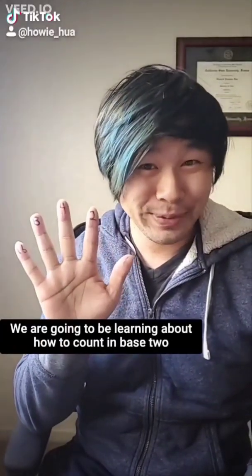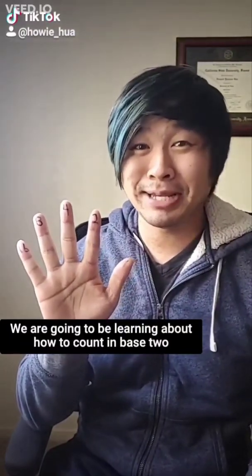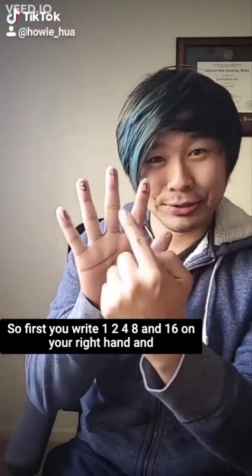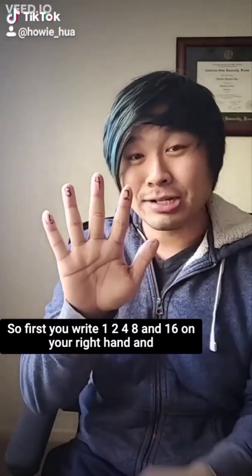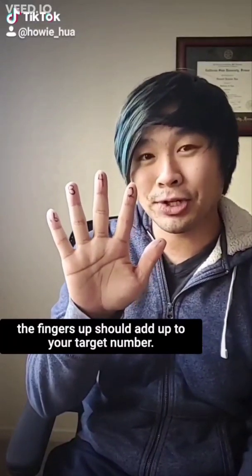Hi, everyone. Today we are going to be learning about how to count in base 2 with your right hand. So, first you write 1, 2, 4, 8, and 16 on your right hand. And the fingers up should add up to your target number.